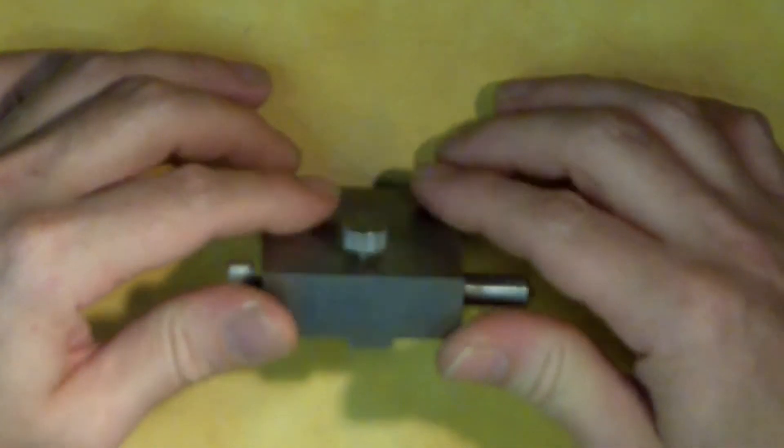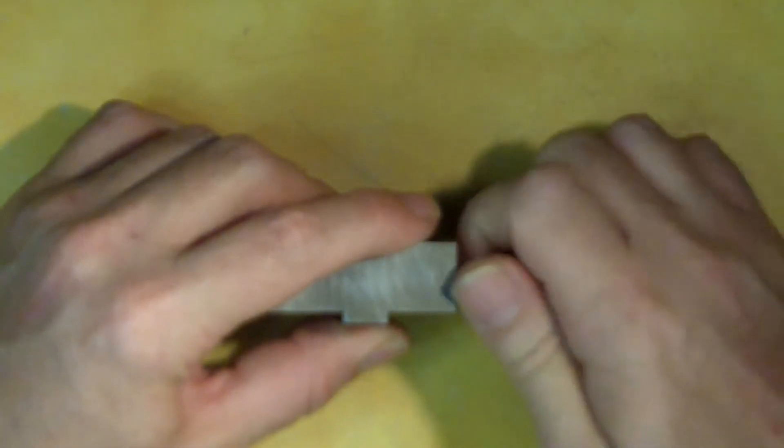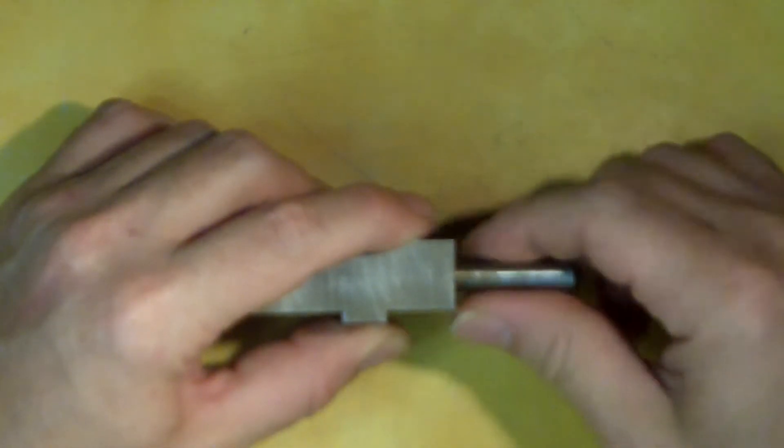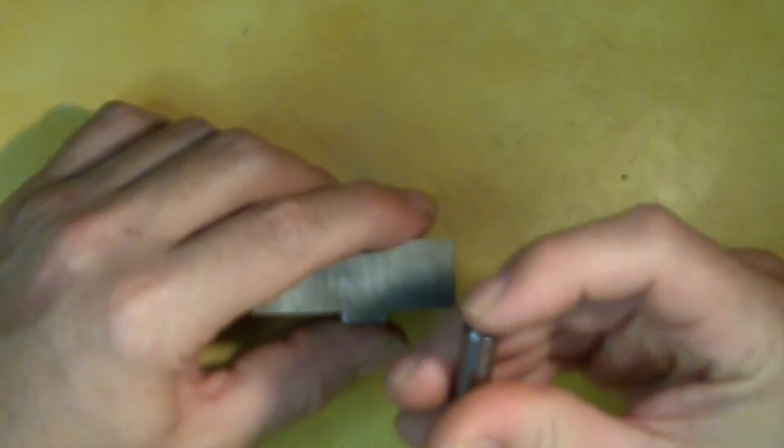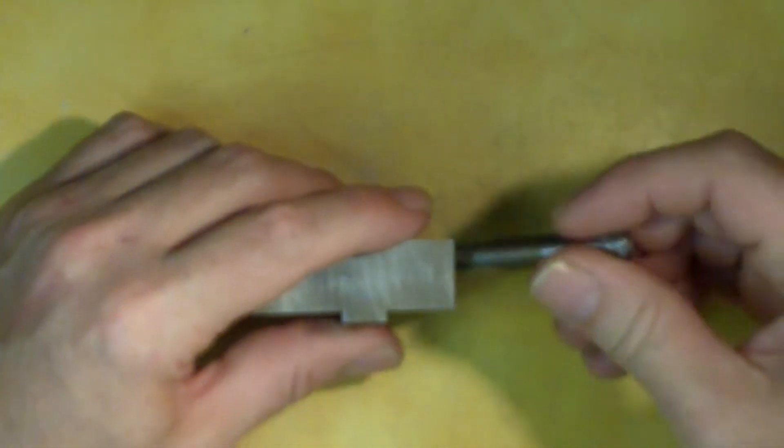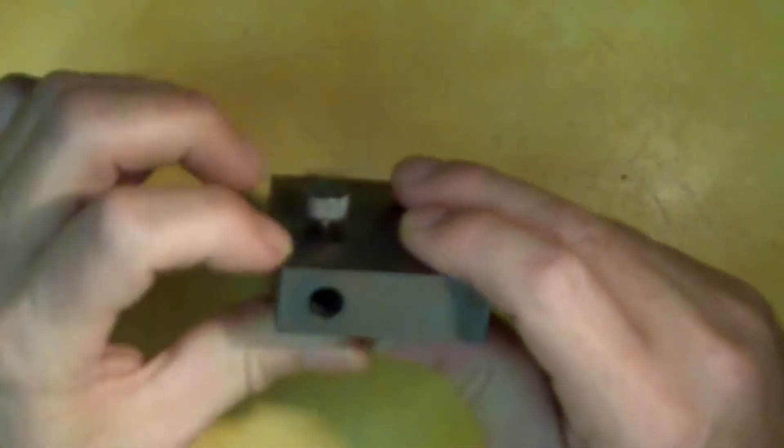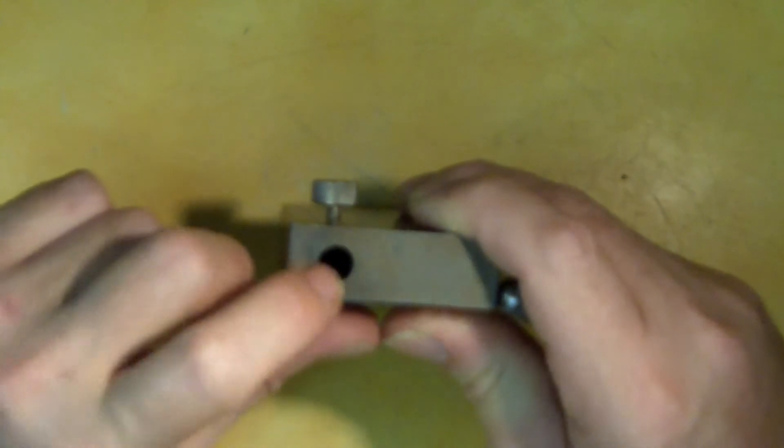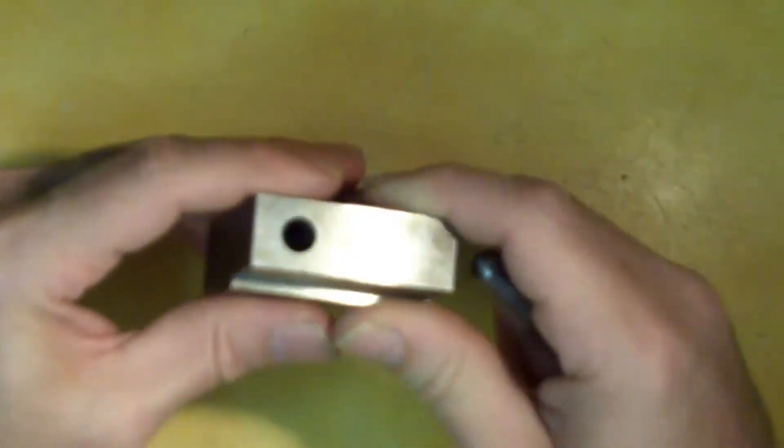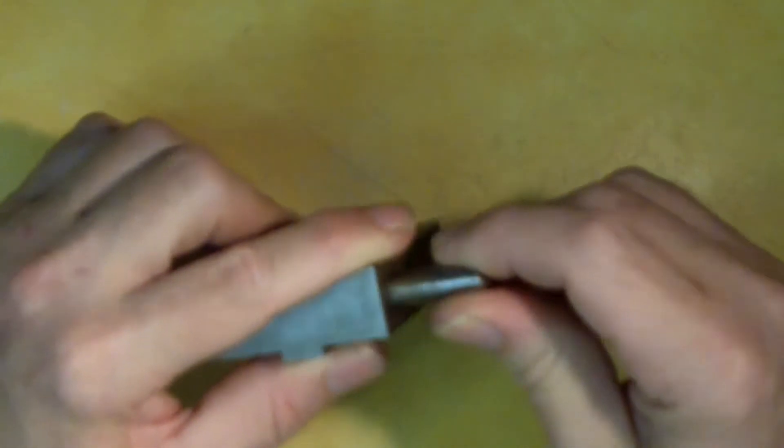What this basically does is hold a diamond pointed dressing tool, and there is a hole that has been drilled and reamed right here to allow this to slide in and out.